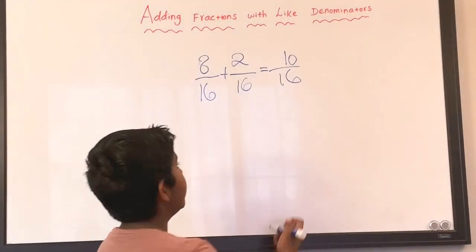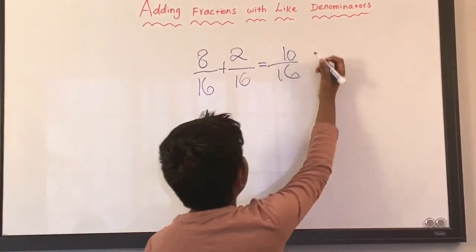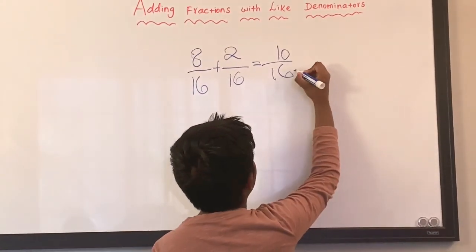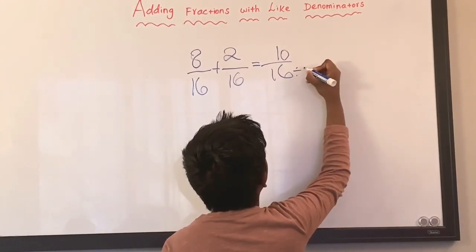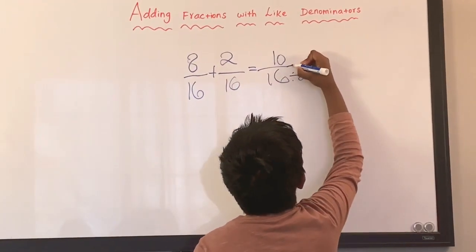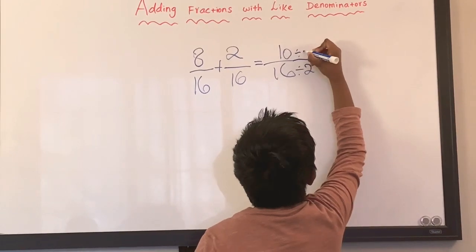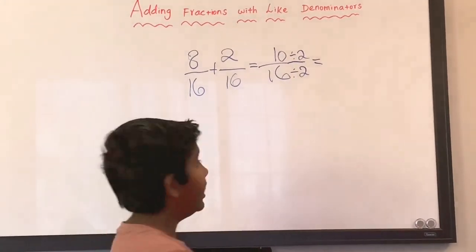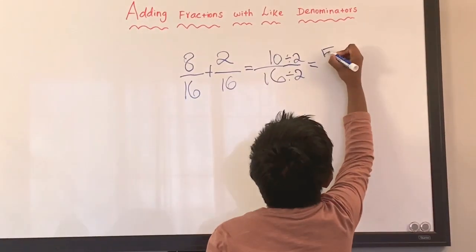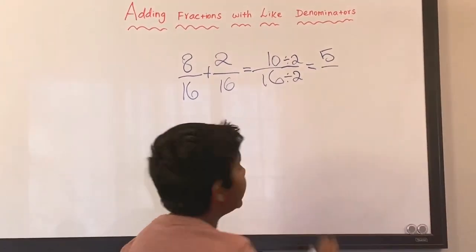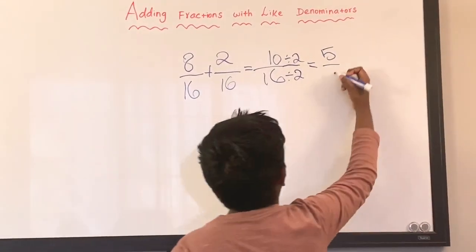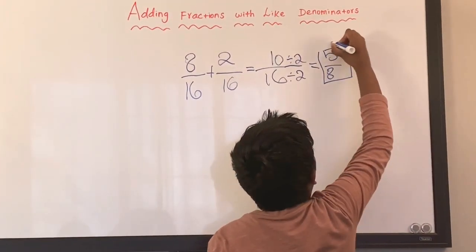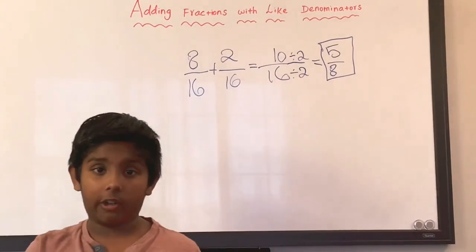These two are divided by two. So sixteen divided by two, and then ten divided by two — that equals five. And sixteen divided by two equals eight. The answer is five over eight.